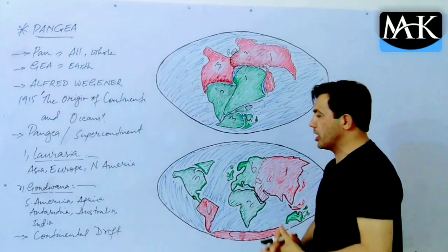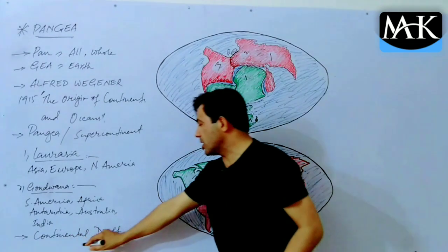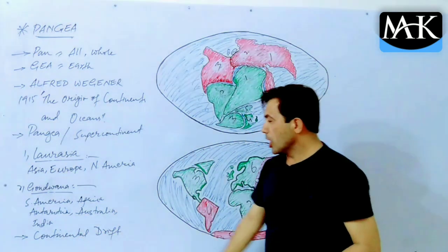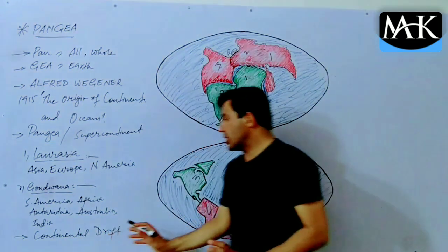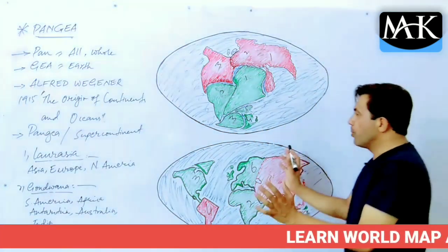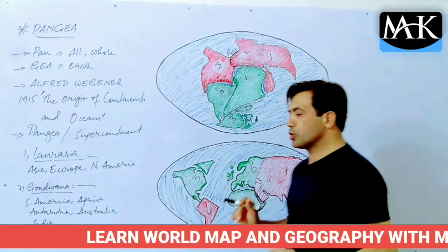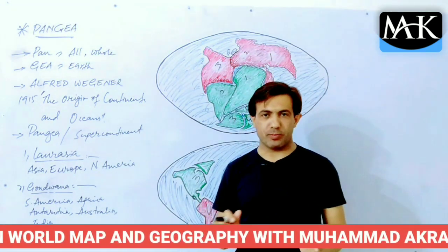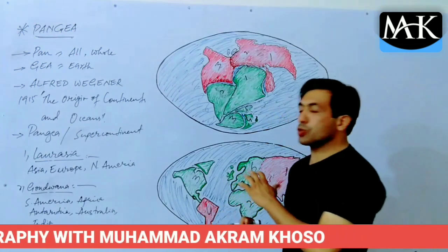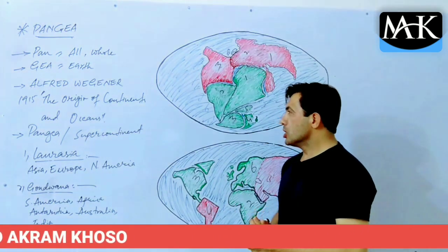Then how did this supercontinent, Pangea, become separated and broken into seven pieces — what we now call continents? There is the concept of continental drift, which means the drifting or movement of continents or land masses. We will also cover plate tectonics, which is a quite interesting and important topic.